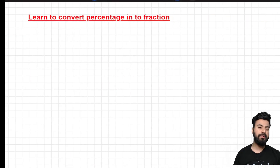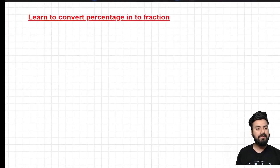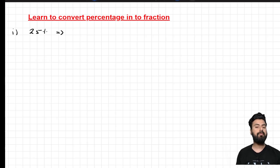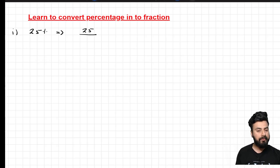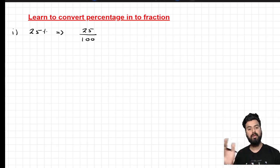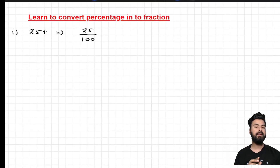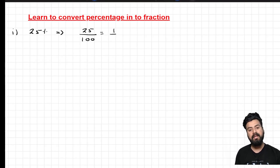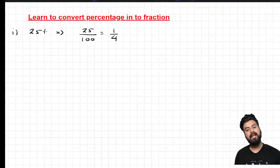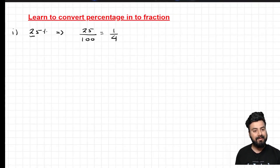The next topic is how to convert a percentage value into a fraction. For a simple value like 25%, the conventional method is to remove the percentage sign and write 100 in the denominator, giving 25/100 = 1/4. So 25% is the same as calculating 1/4 of a number. This approach works fine when the numbers are straightforward.